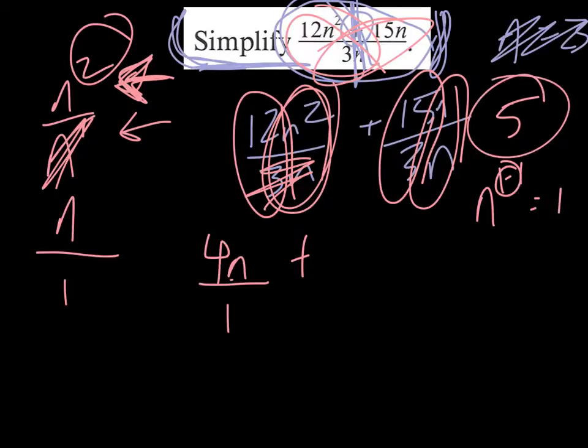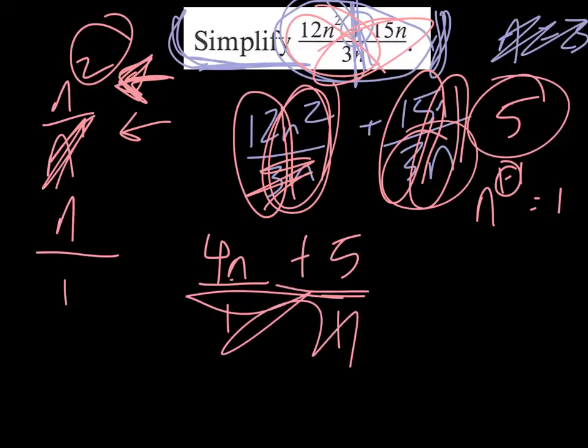Anything to the 0 power is 1, so you're left with 5 over 1 because we simplified that out. This is not necessary. Our answer is 4n + 5.